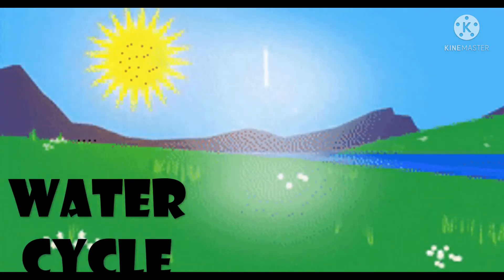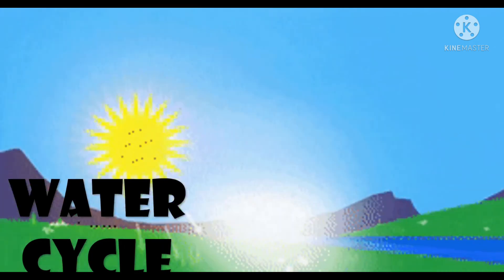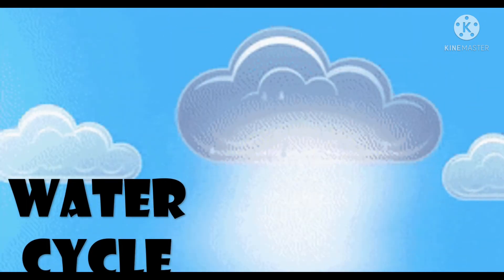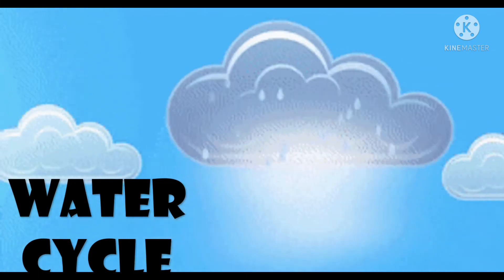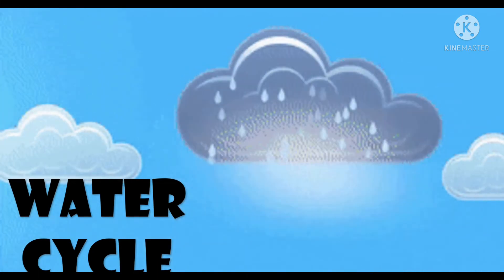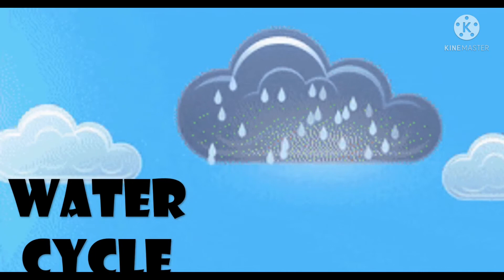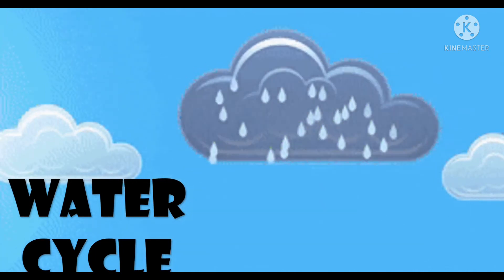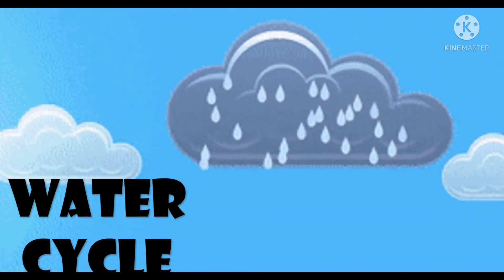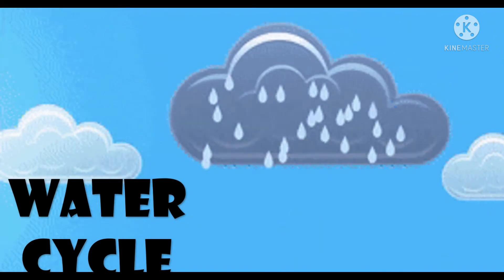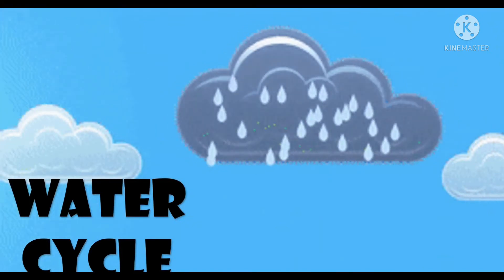When the sun heats up the liquid, it will become vapor in the process of evaporation. Then this water vapor will form clouds in the process of condensation. When the clouds get heavy, they will release rain, snow, hail, or sleet through the process of precipitation. And this cycle is what we call the water cycle.